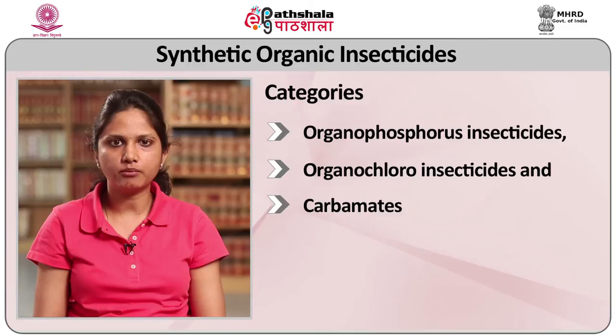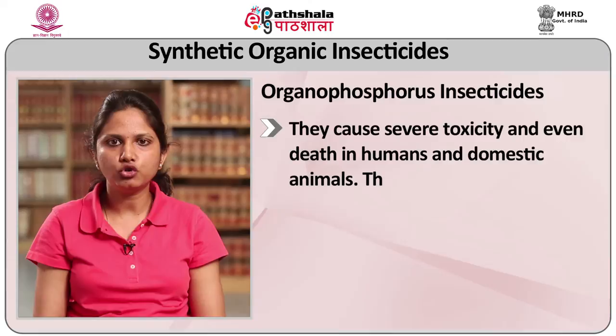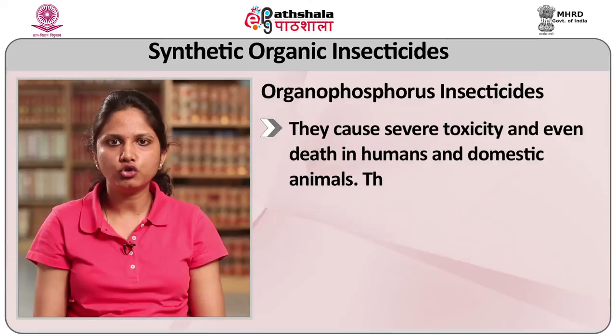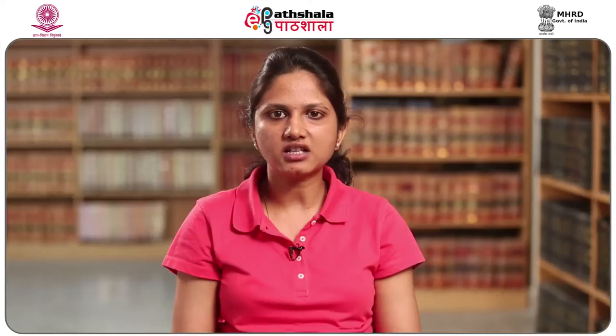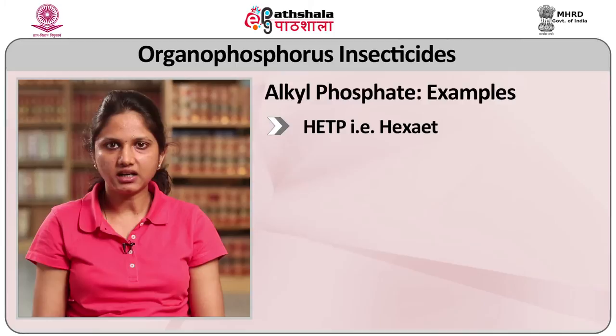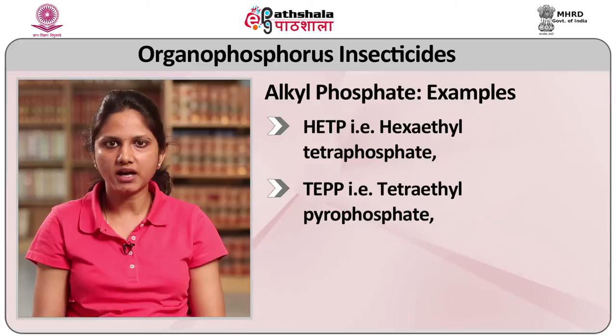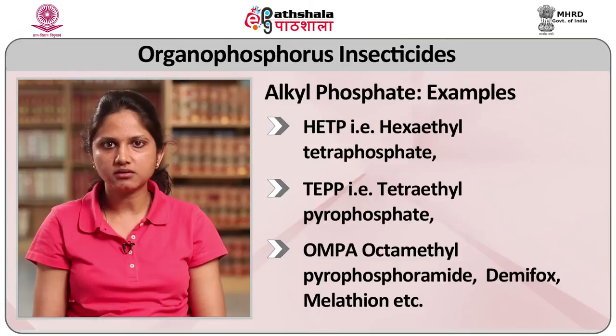Synthetic organic insecticides can be classified into three categories: organophosphorus compounds, organochloro compounds and carbamates. The first category is organophosphorus insecticides. Many organophosphorus compounds are insecticides widely used for the control of insects. They cause severe toxicity and even death in humans and domestic animals. Their toxicity has been recognized since the 1930s when they were developed and used as chemical warfare agents. These are esters of phosphoric acids and can be classified into two different classes: alkyl phosphate and aryl phosphate. HETP (hexaethyl tetraphosphate), TEPP (tetraethyl pyrophosphate), OMPA (octamethyl pyrophosphamide), demeton, malathion, etc. are examples of the alkyl group.